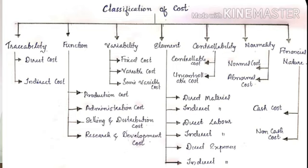On the basis of controllability, cost may be classified into controllable cost and uncontrollable cost. On the basis of normality, cost may be classified into normal cost and abnormal cost. And the last base, on the basis of financial nature, cost may be classified into cash cost and non-cash cost.